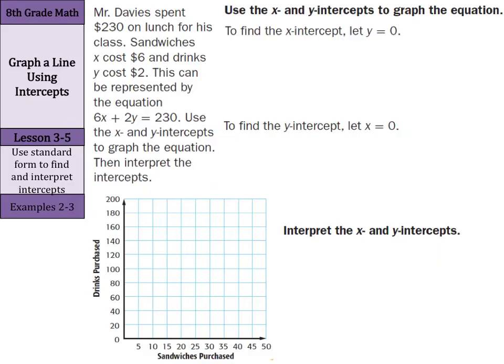Well, let's use the x and y-intercepts to graph the equation first. Now, in the equation here, we have 6x plus 2y equals 230. Now, in order to find the x-intercept, it says we can let y equal 0. So, 6x plus 2, and we're going to substitute in a 0 for y, equals 230.